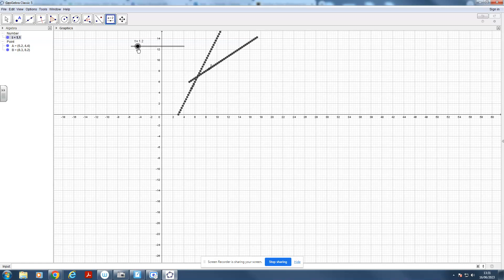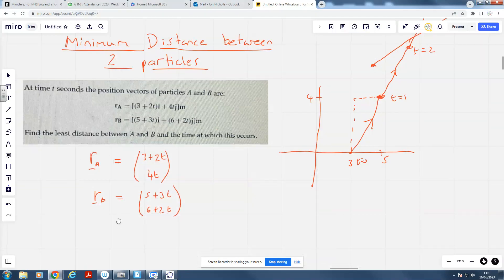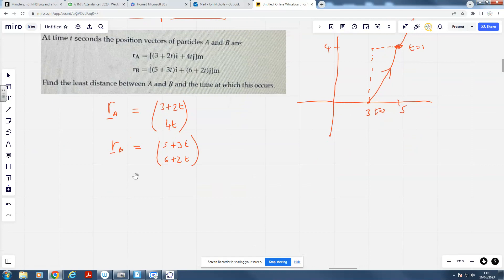But I'm going to show you a much better way of looking at it now. The best way of looking at it is to find the relative position of B from A, which means we need to find the vector which takes us from here to here. So, I'm going to find the general position of how you get from A to B. Now, I'm going to do that by doing this one minus this one, because A to B is OB minus OA. Our AB is just going to be 5 plus 3t minus 3 plus 2t, and that's going to give you 2 plus t here, and then 6 plus 2t minus 4t, which is 6 minus 2t here.